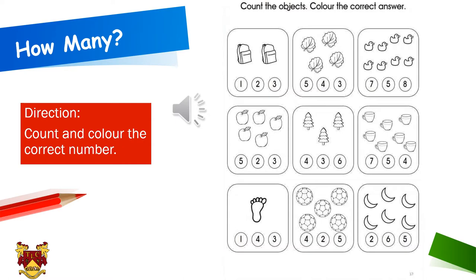Now let's move on to the next picture. What do you see? Yes, there are leaves. And how many leaves are there? Let's count: one, two, three, four — yes, four leaves! So you are going to color the circle with number four. Similarly, you will count the number of objects in each picture and color the correct answer.